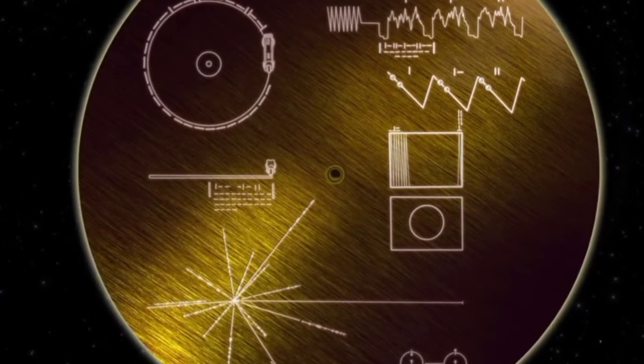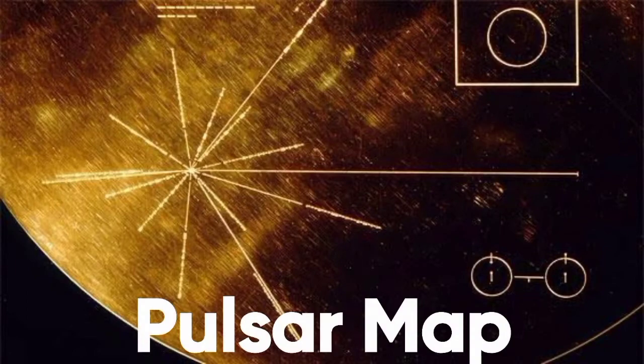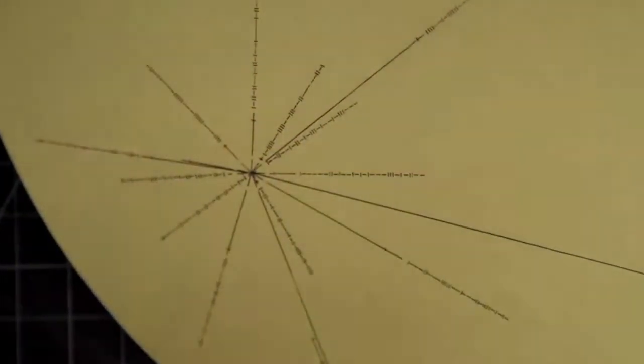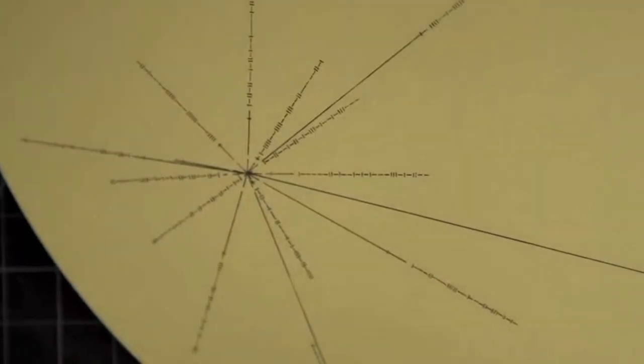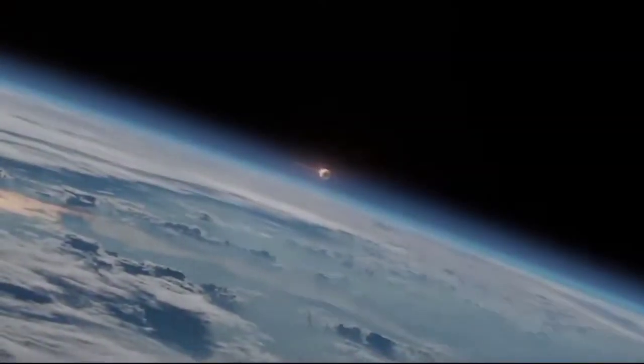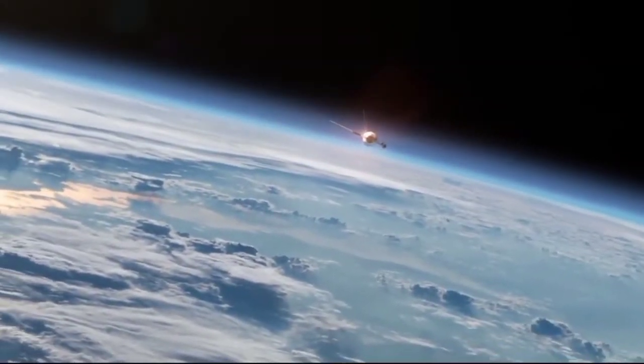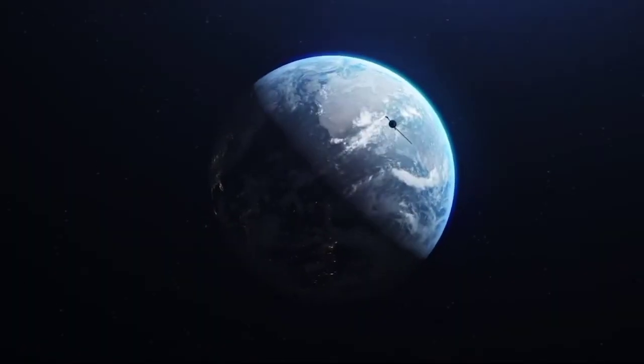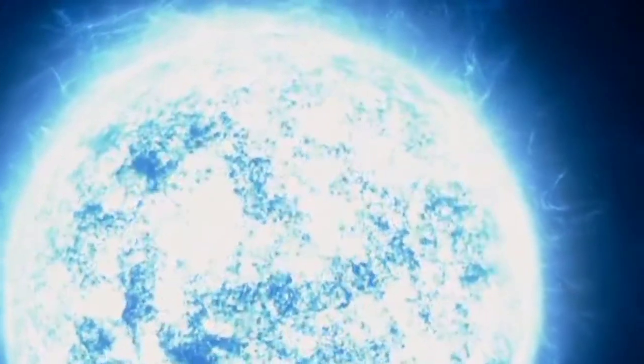The largest symbol on the cover is a pulsar map, which shows Earth's location in the universe by triangulating Earth's distance from various neutron stars. The pulsar map would give anything that finds it a clue as to where it came from in the universe. Want to learn more about neutron stars? We made a video about it. You can go check it out after this video.